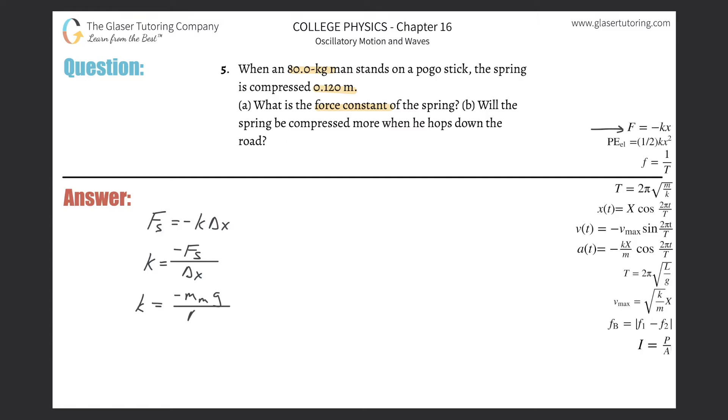Now I can simply just plug everything in. The mass of the man is 80 kilograms, gravity is 9.8, and then divided by the change in displacement. It's being compressed, so like I said it's going to be negative.